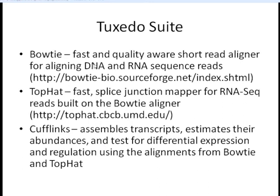The set of programs we'll talk about today are called the Tuxedo Suite. These include Bowtie, TopHat, and Cufflinks — hence the Tuxedo. Bowtie is a very nice program for fast and quality-aware alignments of short reads, taking into account the quality scores we saw in FASTQ format. This is for aligning mostly DNA to DNA, but it's also the backbone for aligning RNA to DNA in TopHat, which is splice-junction aware. Cufflinks is not for sequence alignment but for prediction of transcript abundance, and it's built on top of Bowtie and TopHat.